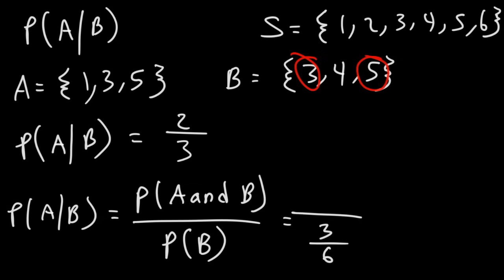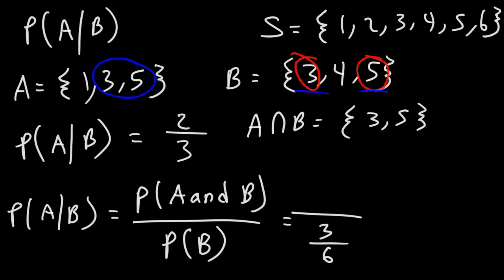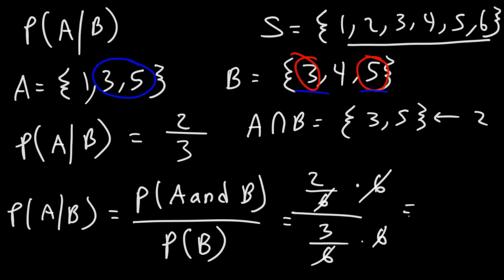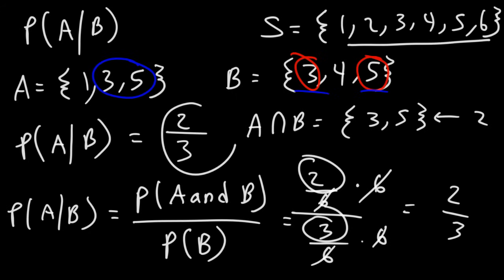What about the probability of events A and B occurring? The intersection of A and B contains the numbers three and five. So event A and B will occur for two numbers out of the six possible, giving a probability of two over six. Multiplying the top and bottom by six simplifies this complex fraction, and we're left with two over three — the same answer as before. That's a simple way to calculate conditional probability.